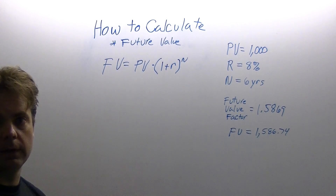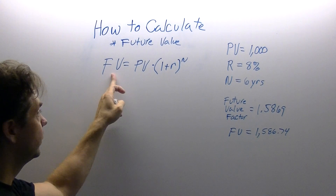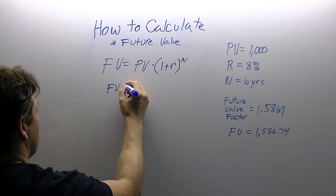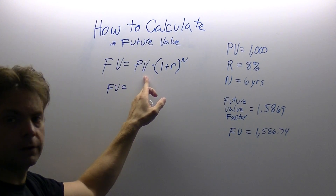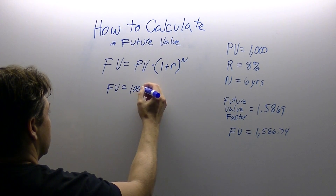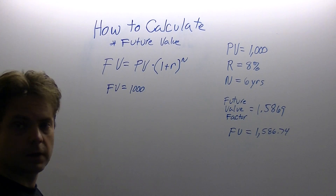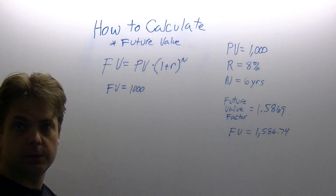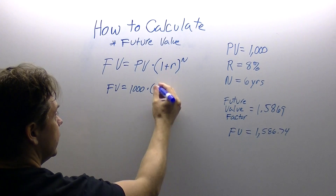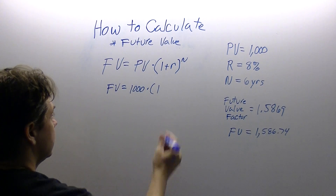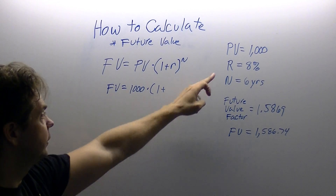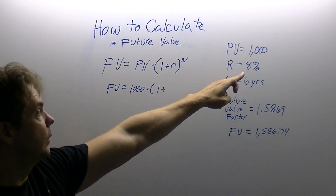Once we have this formula set up, now we start to substitute. We don't know what the future value is, so we are going to drop it. Our present value is our $1,000, so we substitute $1,000 in for present value. Next we drop our multiplication sign, open up our parenthesis, drop our 1, drop our addition sign. Now we substitute R, which is our interest rate of 8%.